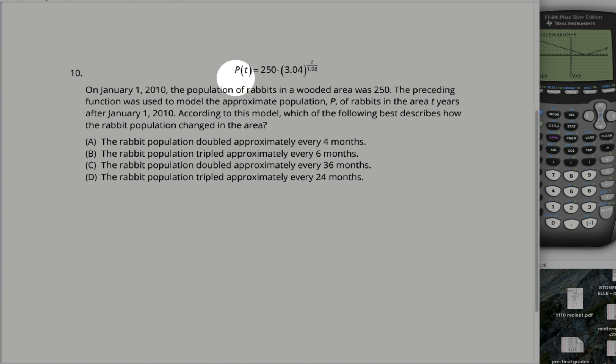The basic idea is we're modeling the population of rabbits with this exponential function, 250 times 3.04 raised up to the t over 1.98, where t represents years into the future. That part is pretty important, that t represents years into the future, but in all the answers they give the answers in terms of months. It's not necessarily hard, but in the pressure of the test you might miss that.